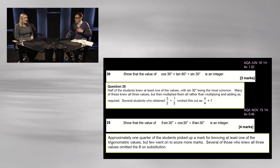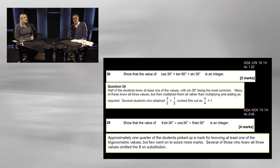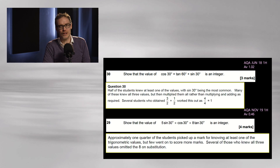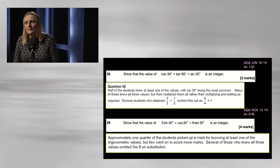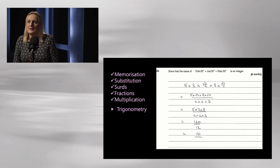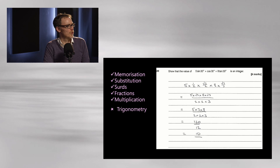In the second question, almost a quarter of students picked up a mark for knowing one exact trig value, but some who knew all three made errors on substitution. They're literally making silly mistakes. They're quite big questions — three marks and four marks. If you've made a tactical decision to skip these, it's quite chunky marks to give away. But these questions require a lot of non-calculator work: memorising, substitution, working with surds, using fractions — and actually no geometry at all.